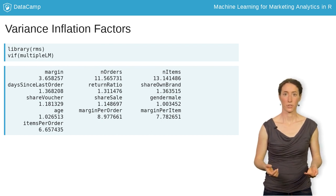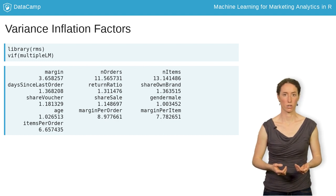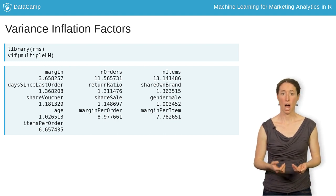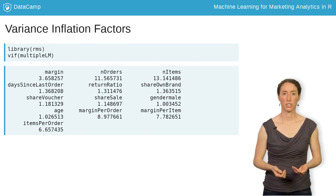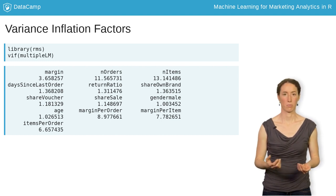As expected, the VIFs for n orders and n items, as well as margin per order and margin per item, are rather high. Hence, we exclude one of each pair from the regression, namely n items and margin per order.